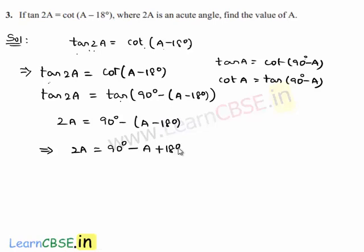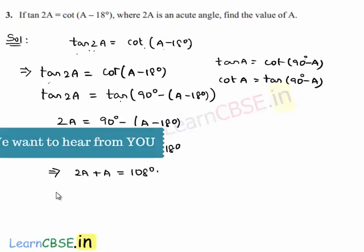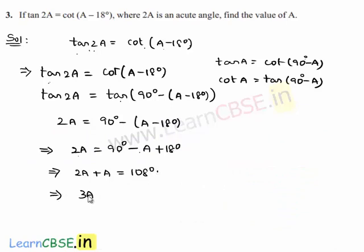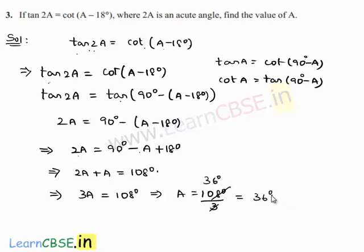Since we have the same trigonometric ratio on both sides, we can equate the angles: 2A equals 90 degrees minus A minus 18 degrees, which gives 2A equals 90 degrees minus A plus 18 degrees. Transposing minus A to the left-hand side: 2A plus A equals 90 plus 18 degrees, that is 3A equals 108 degrees. Therefore A equals 108 divided by 3, which is 36 degrees. The value of A is 36 degrees.